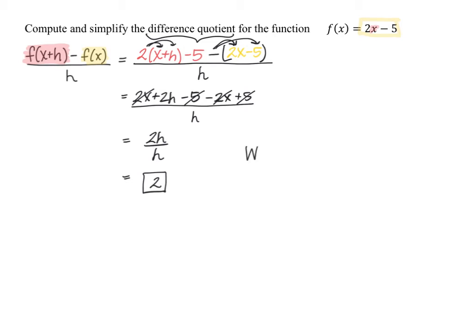So the difference quotient simplified all the way down to 2. Let's think about why we're ending up with just a number — no x's or h's in our answer. Think graphically: what does f of x equals 2x minus 5 actually look like? It's just a line with a y-intercept of negative 5 and a slope of positive 2. To graph it, we travel from the y-intercept up 2 and right 1, repeatedly, to get our line. So if you think about drawing a secant line and picking any two points on this curve — which is just a line —